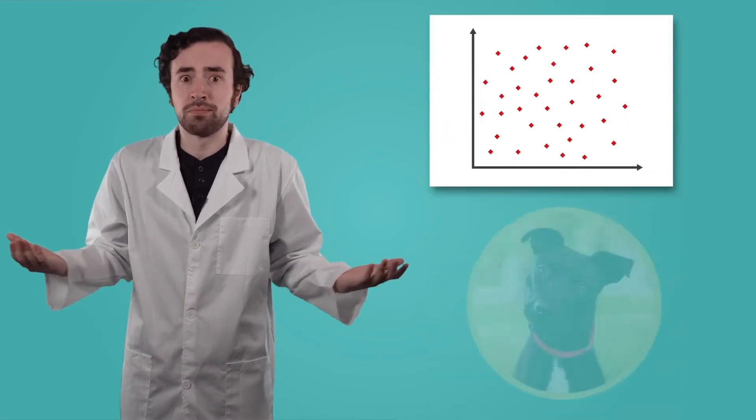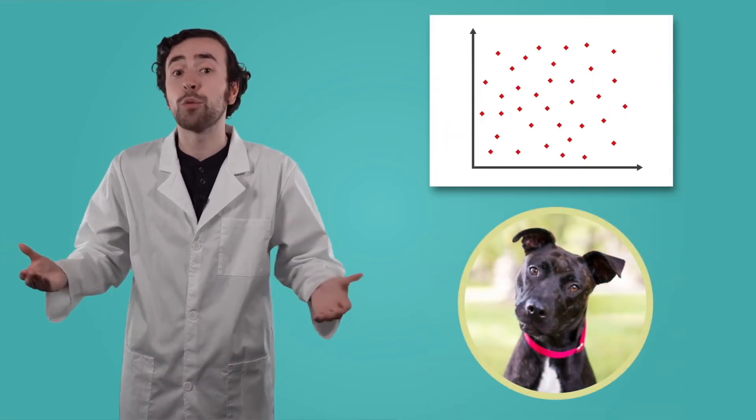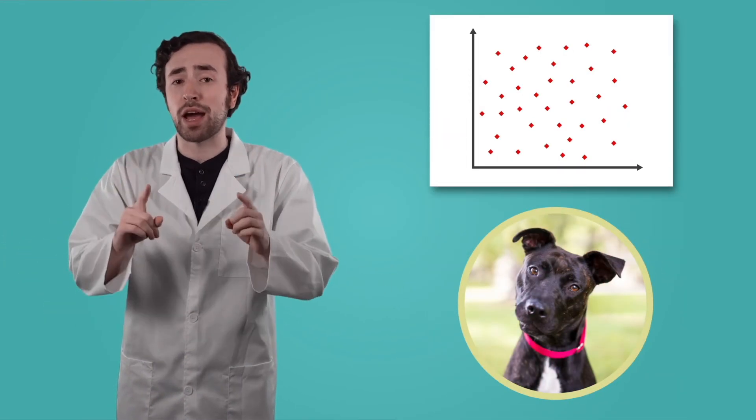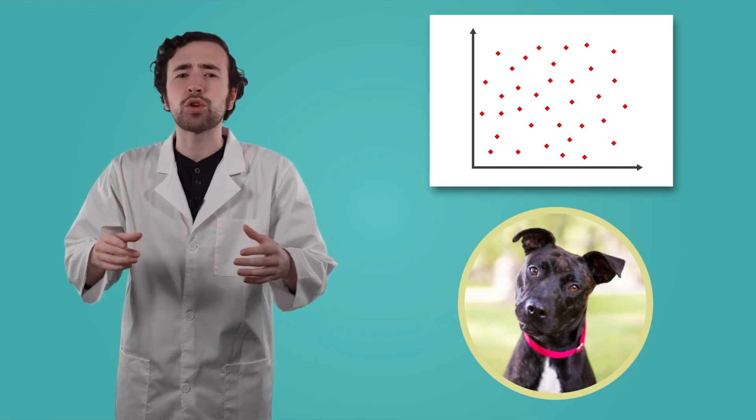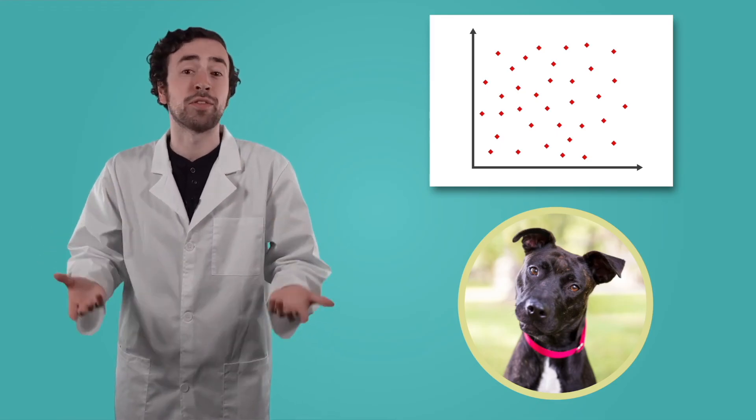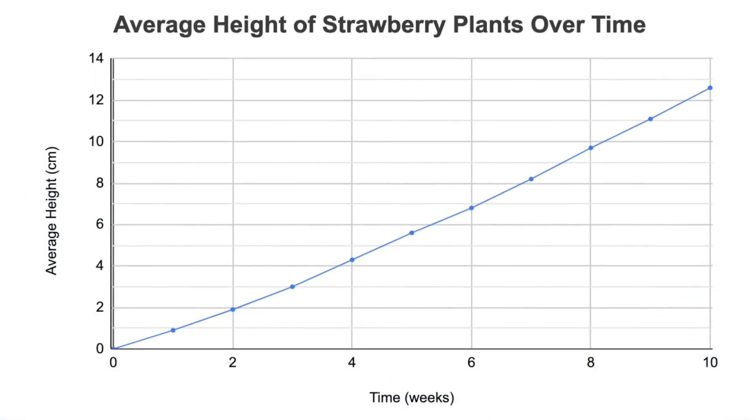Finally, there could also just be no correlation at all, like how we'd see no pattern if we graphed the correlation between a dog's eye color and the length of their fur. Do you think there's a correlation between the height of my strawberry plants and time? If you said yes, then you're correct. In fact, the height of the plants increases as time increases.